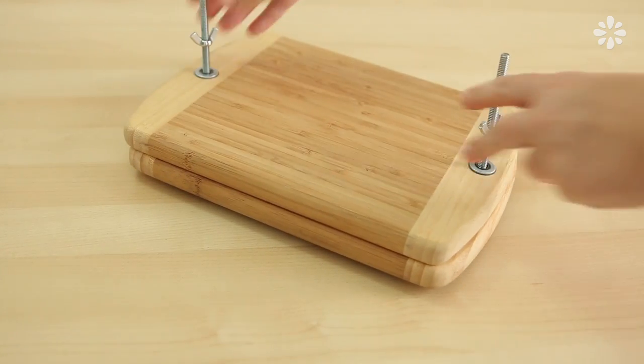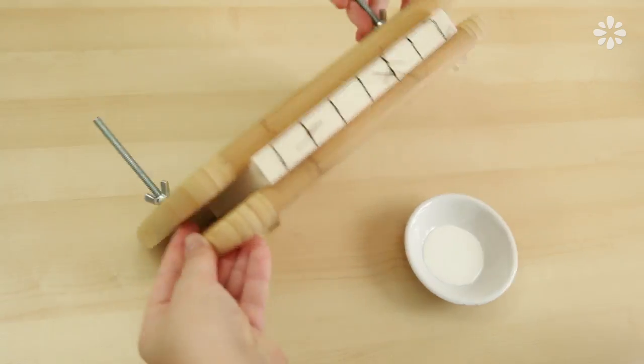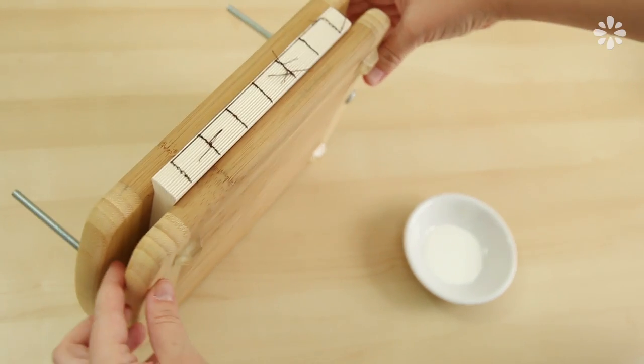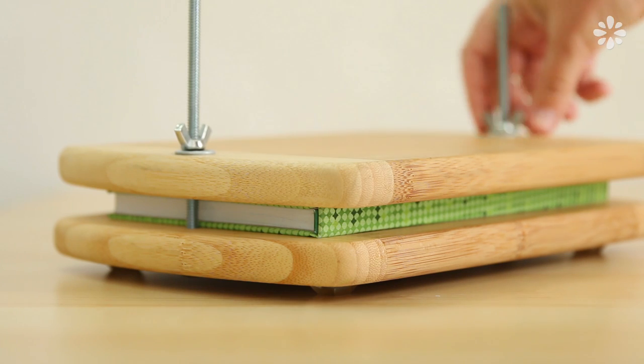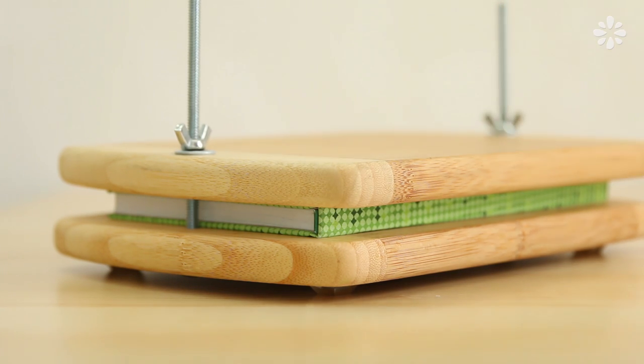This was the method I used before I made a book press and I still prefer the DIY book press more because you can stand it upright and it stands up on its own if you want to glue it that way and it can press your entire book where the stir sticks can't do that.